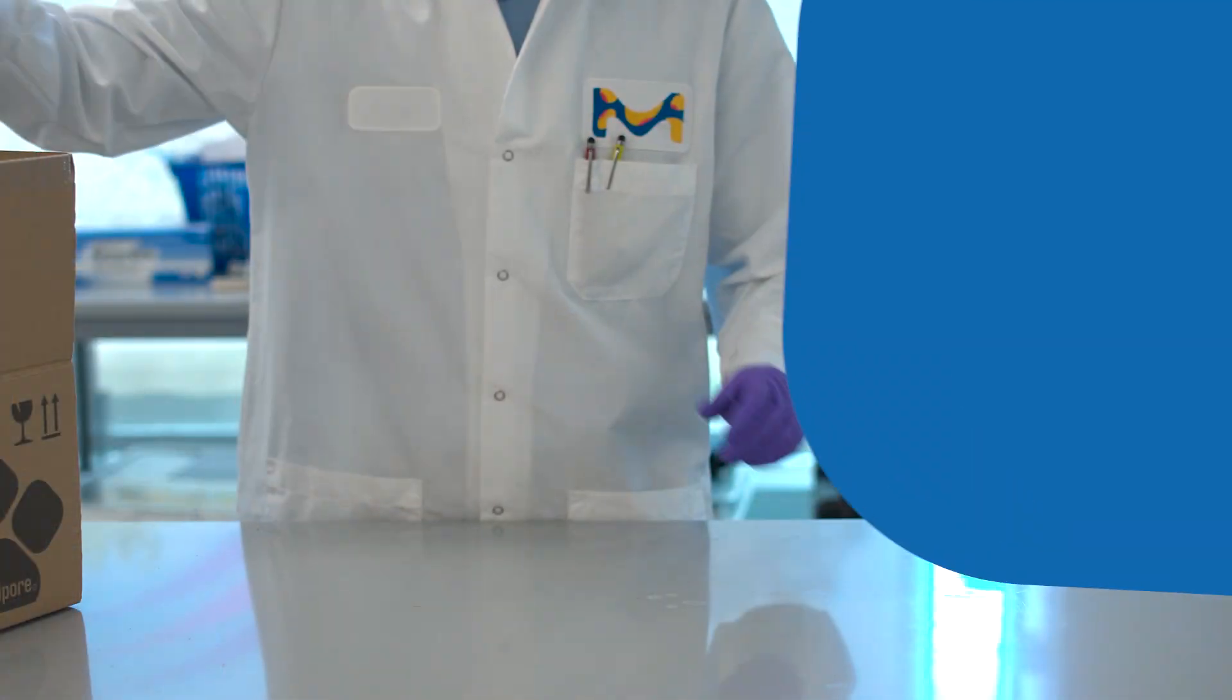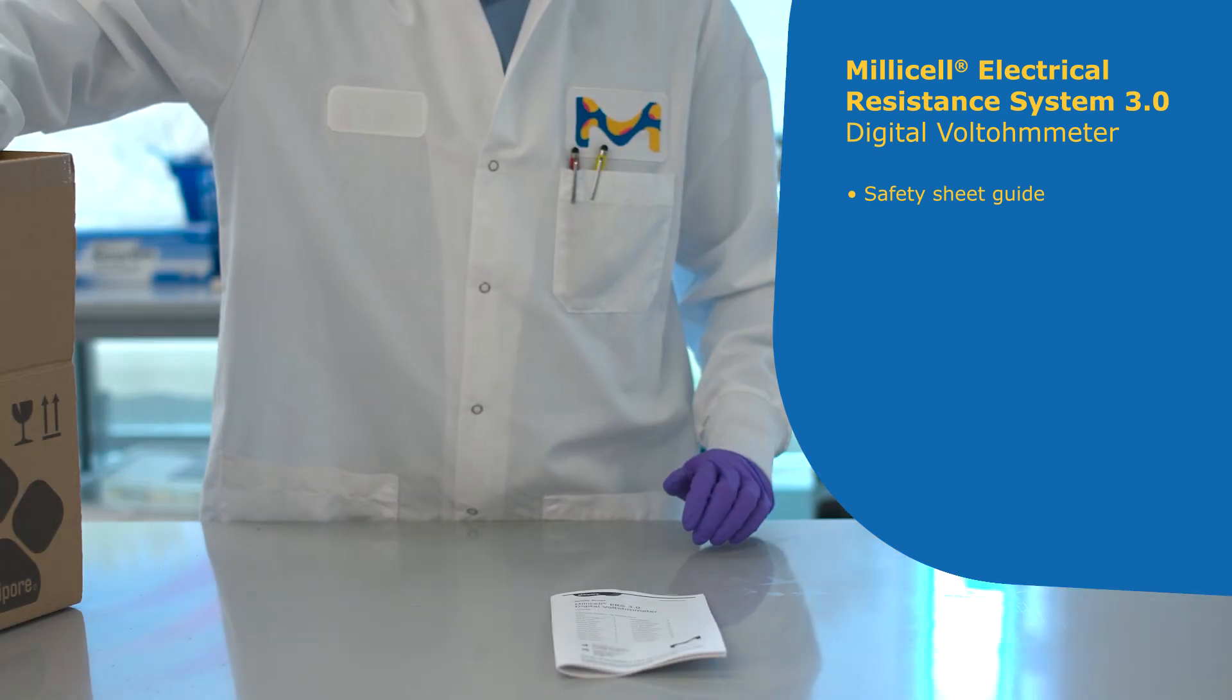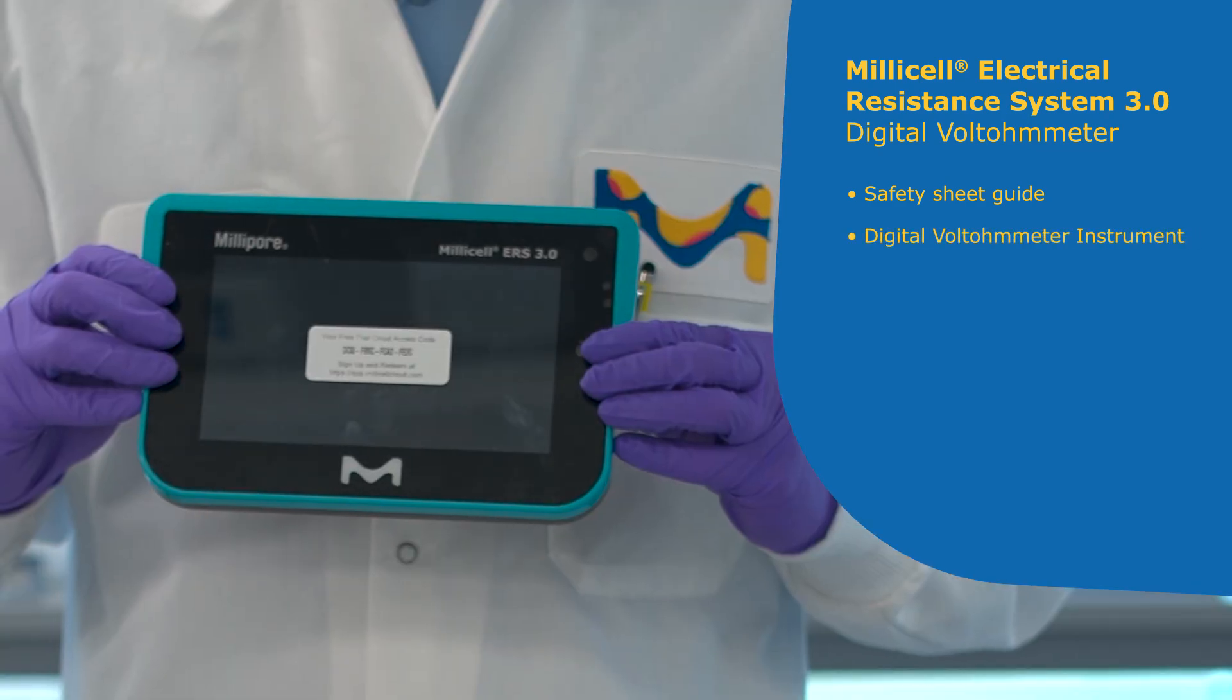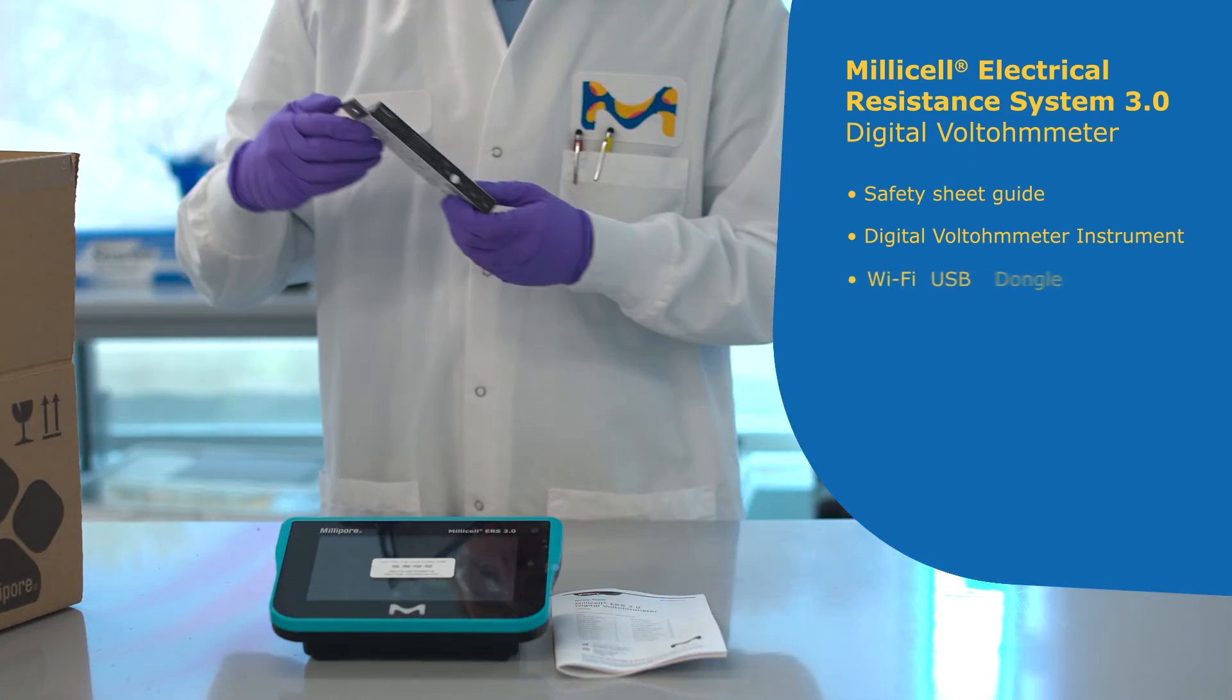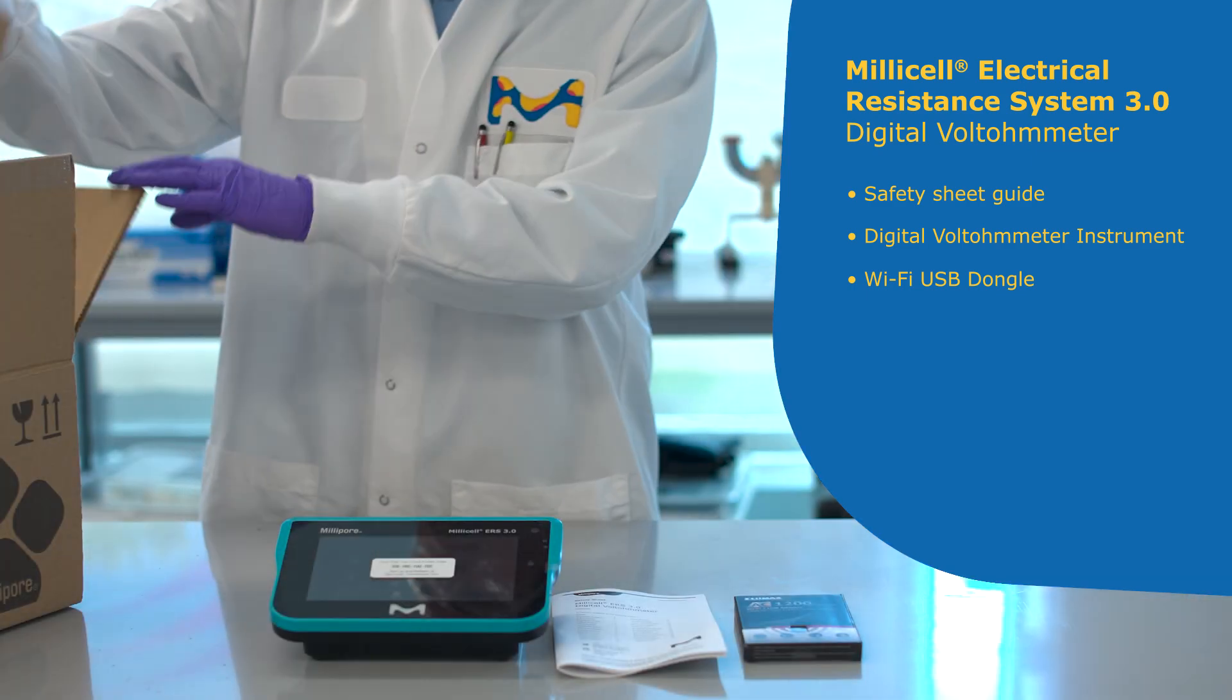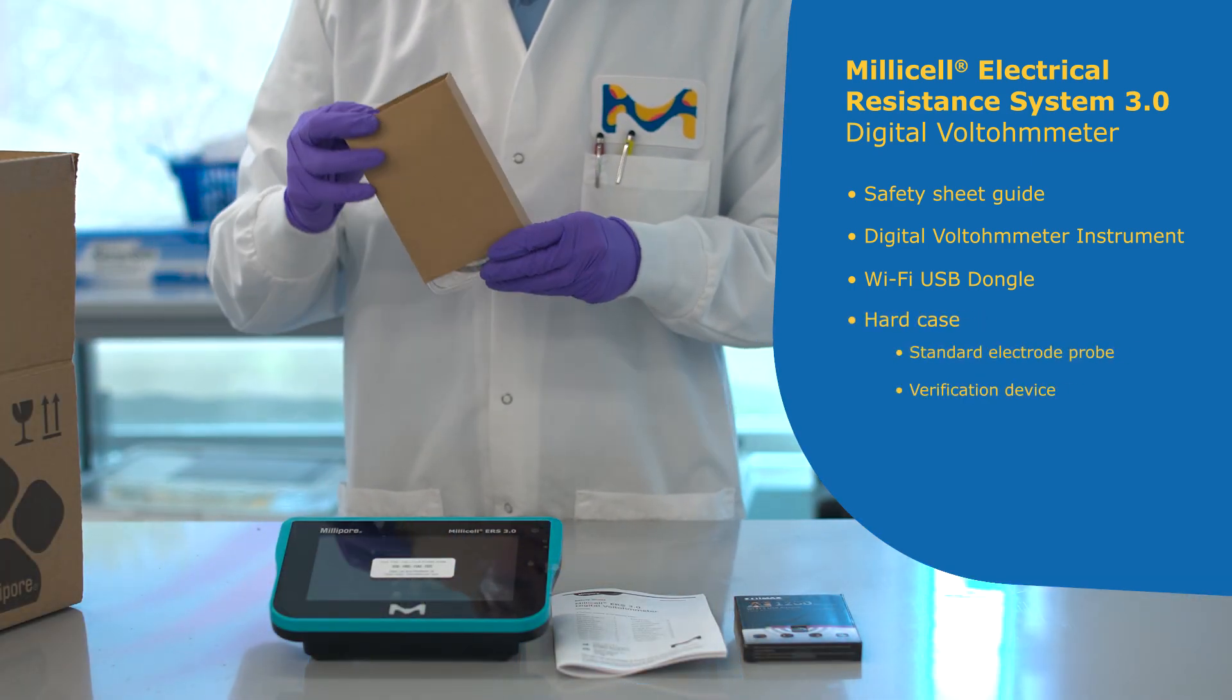Your Millicel ERS comes in a box with a safety sheet guide and the Millicel ERS 3.0 Digital Voltometer instrument. Inside the box there is also the Wi-Fi USB adapter as well as a case that contains the standard electrode probe and the verification device.